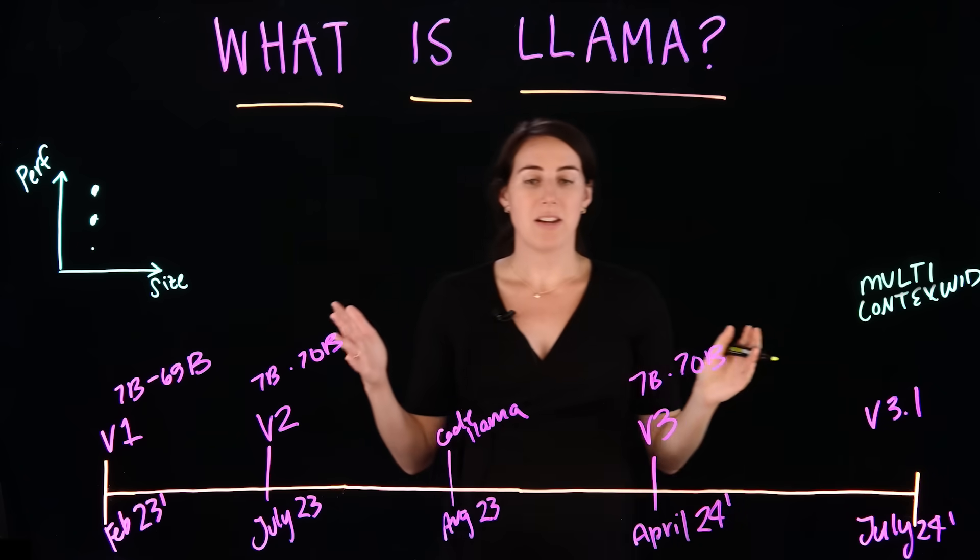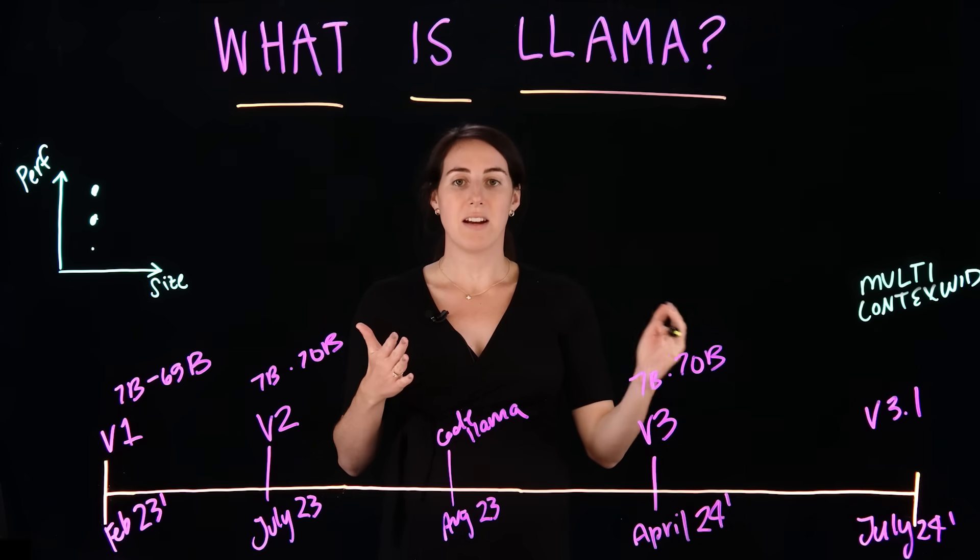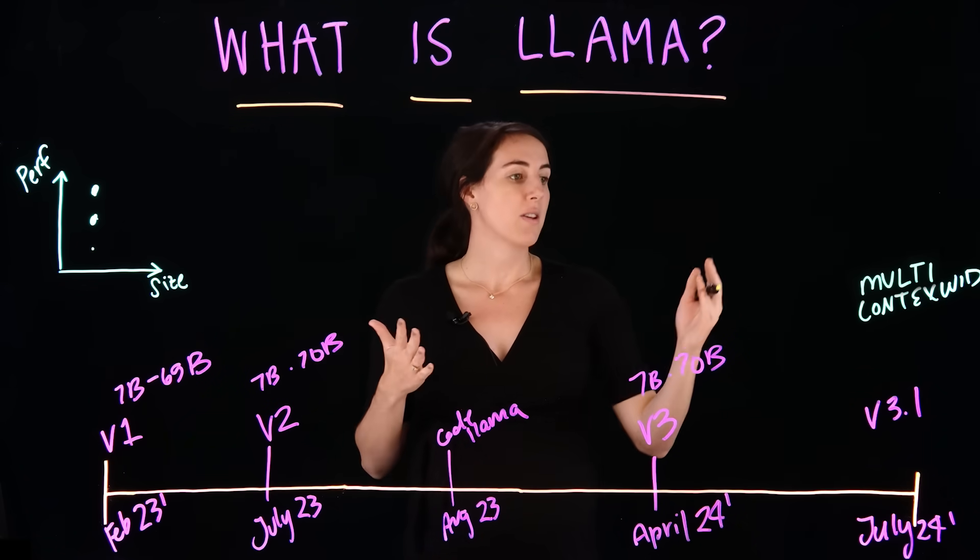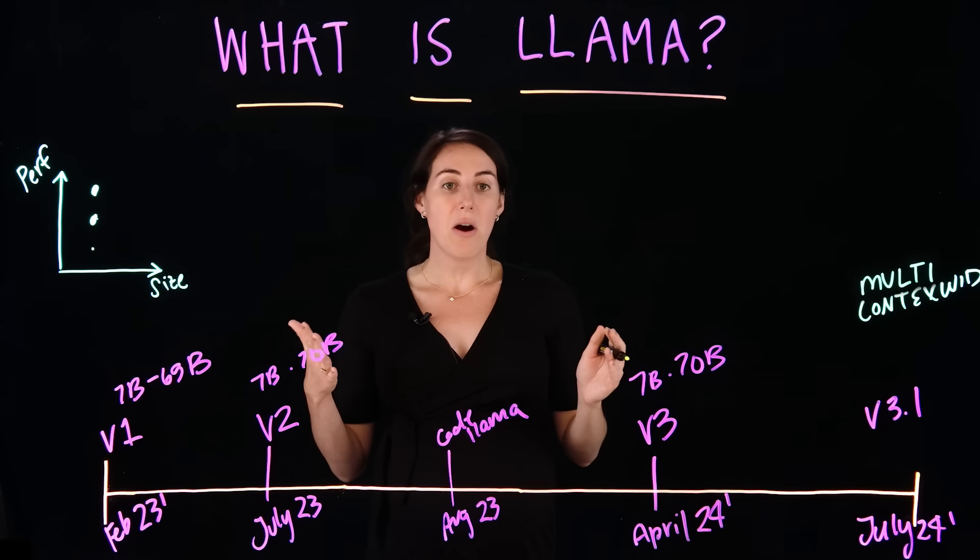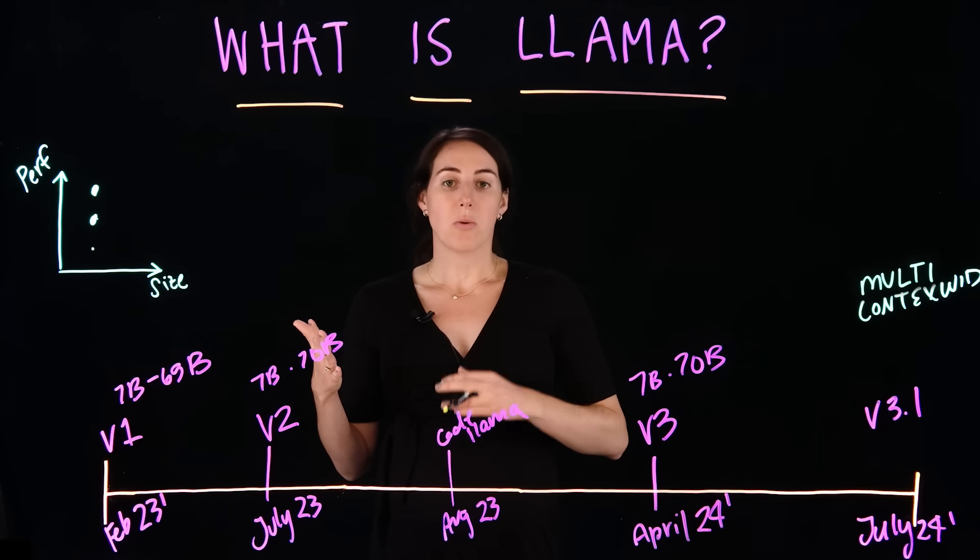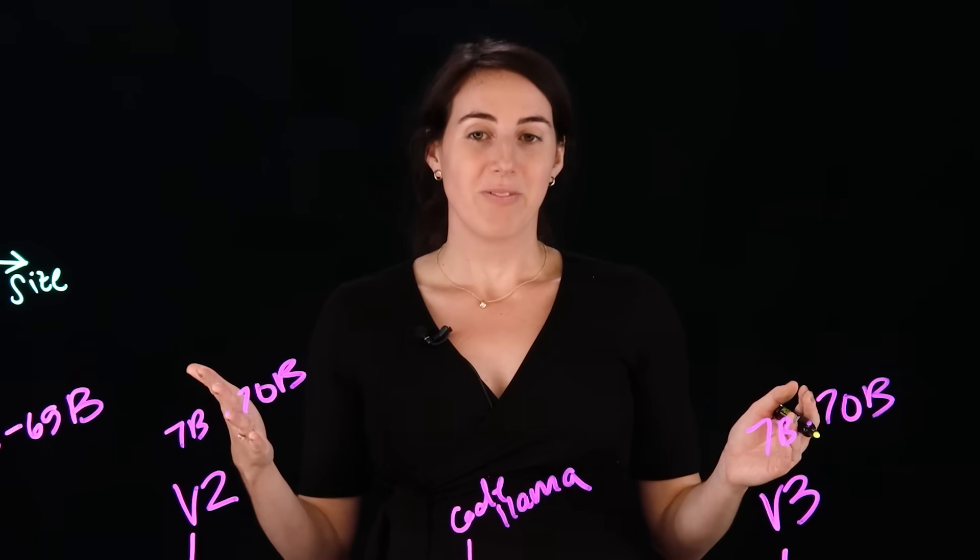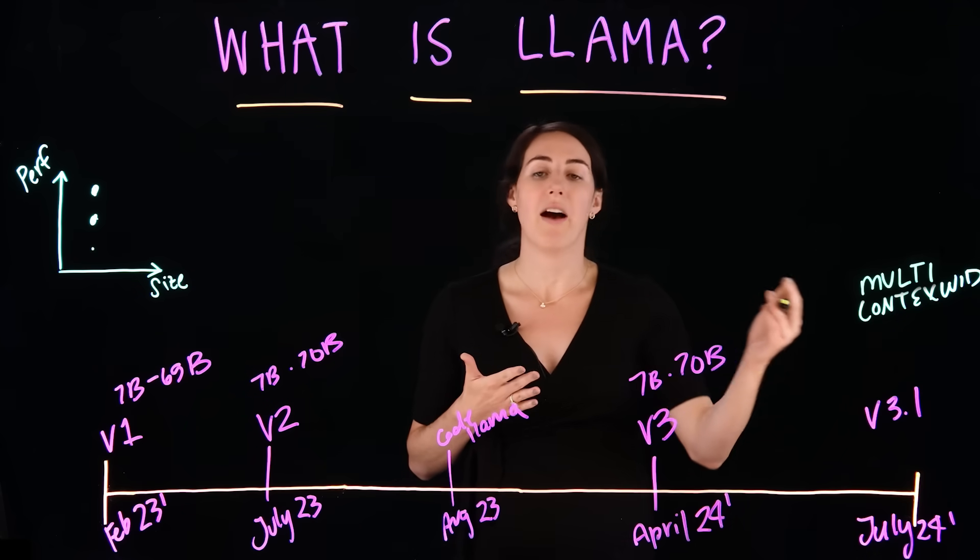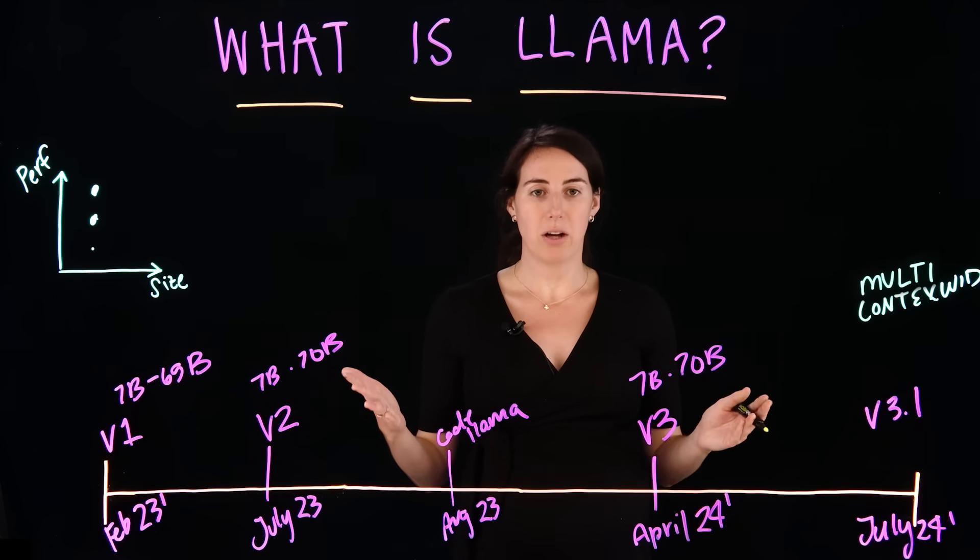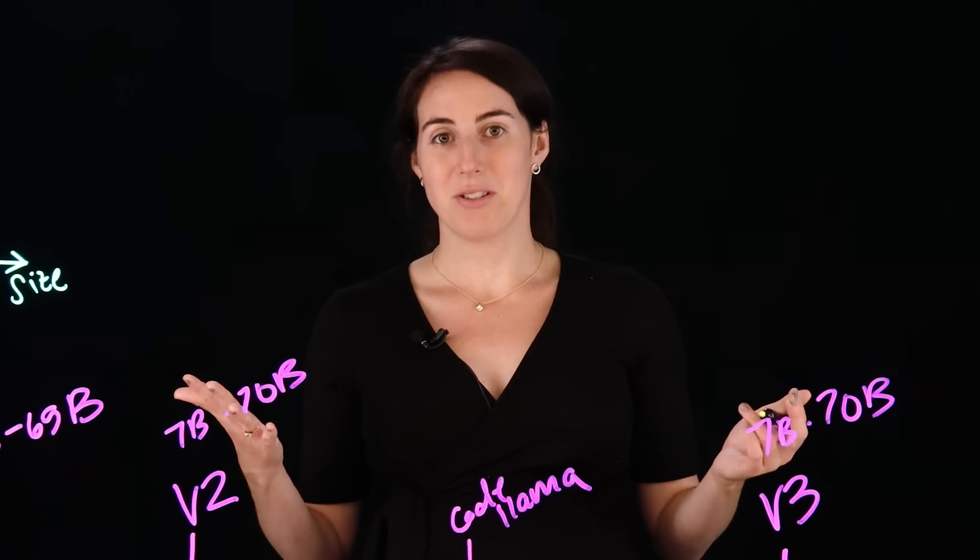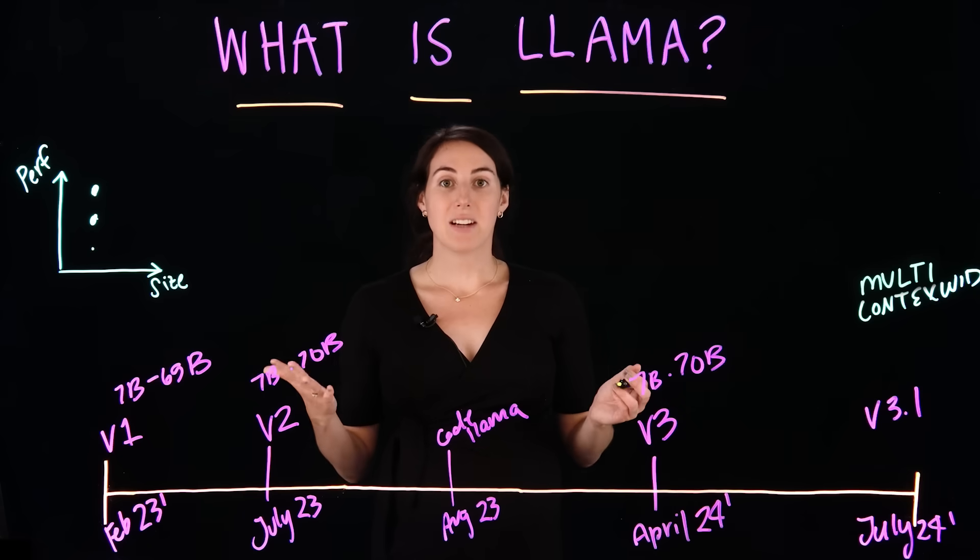Second is the context window. The context window is the amount of data that is output of the model relative to the number of tokens. So, what this means is that now Llama can produce more text for a single run of the model. And this is exciting because you have more ability to run the model in different places, but it also introduces some security risks.